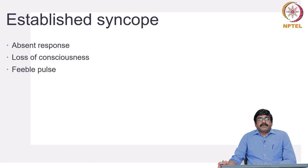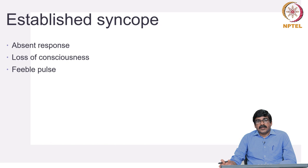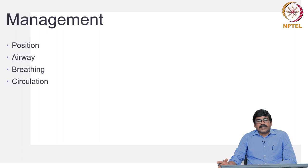If we miss the prodromal stage, the patient passes on to the developed or established syncope stage — there is no response from the patient, consciousness is absent, the pulse is very feeble, and there may or may not be hypotension. The patient has fainted totally, which we call syncope. If we miss the prodromal stage, we will end up in this stage. But as we know, syncope can be easily prevented and also easily managed.